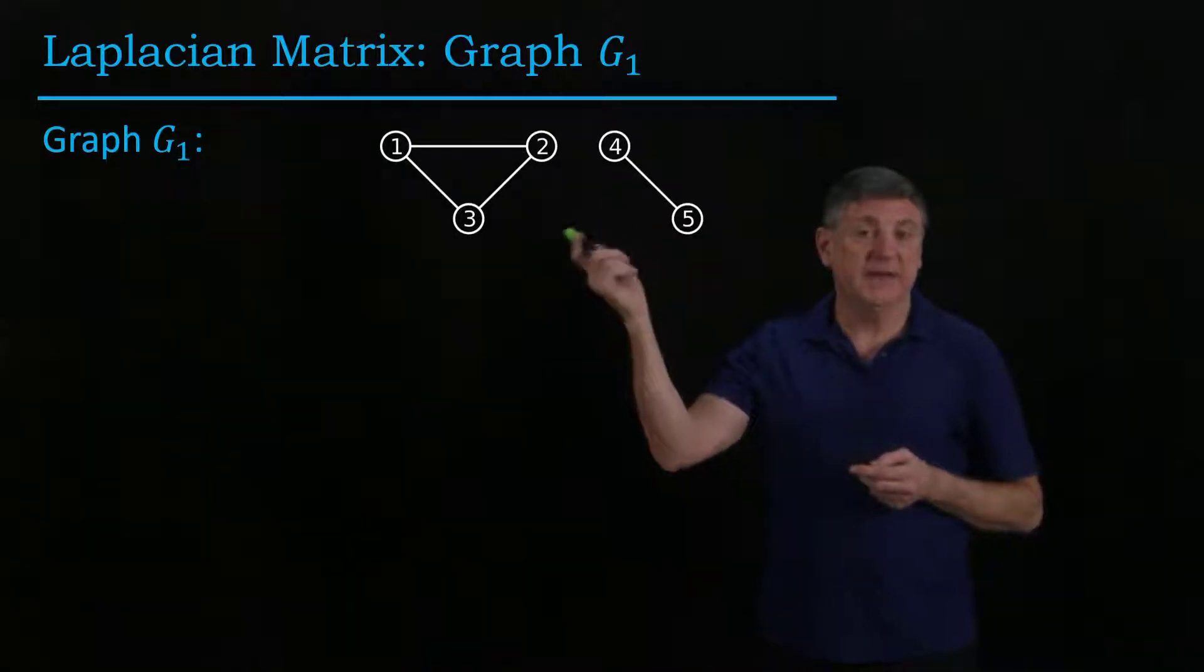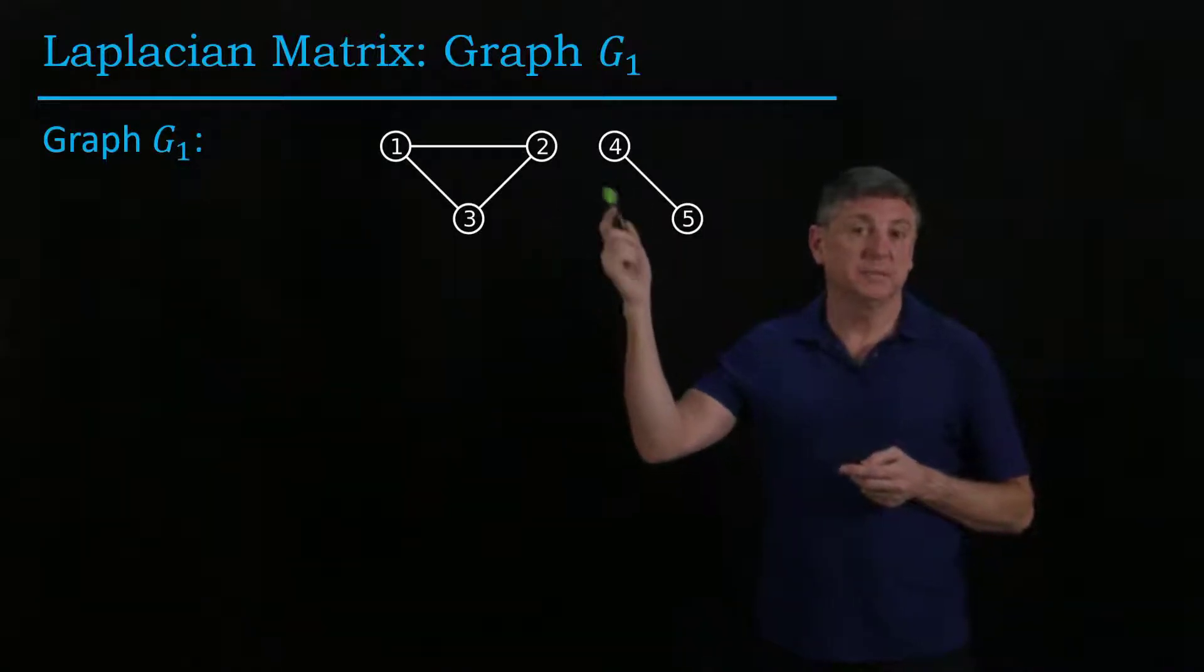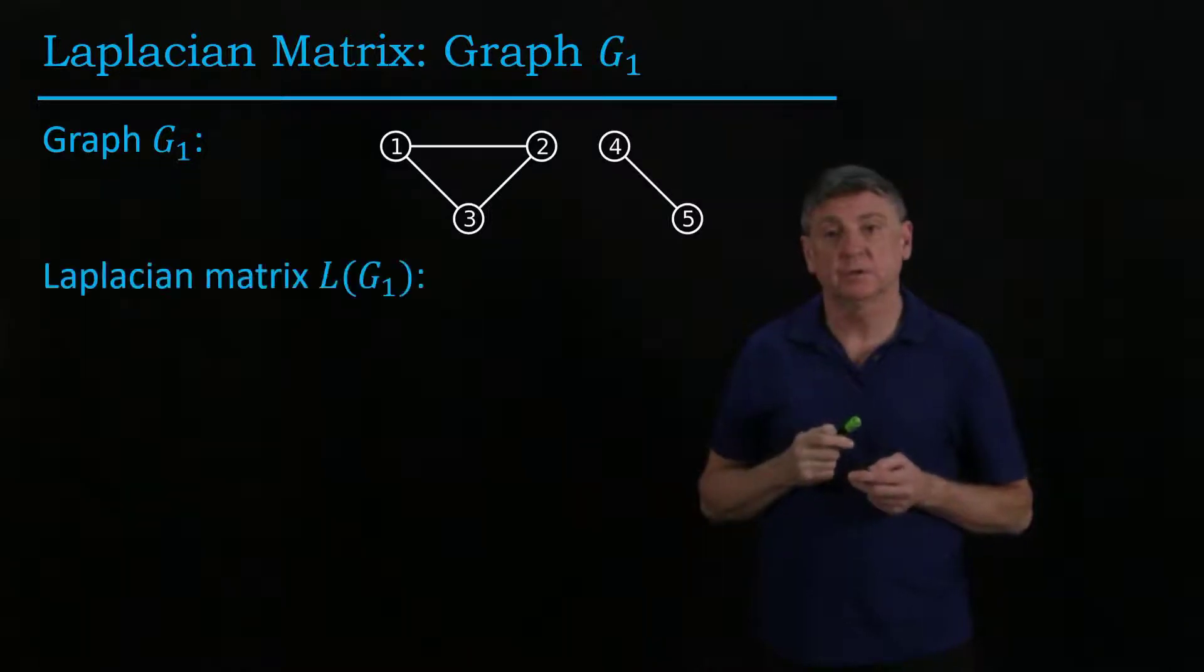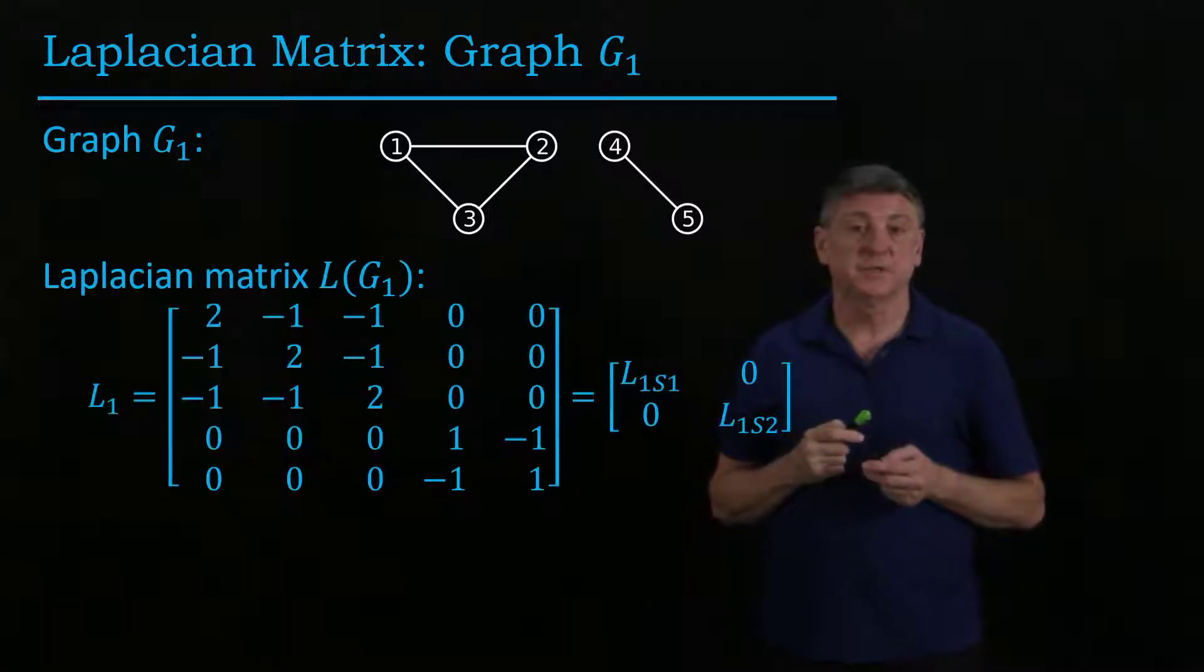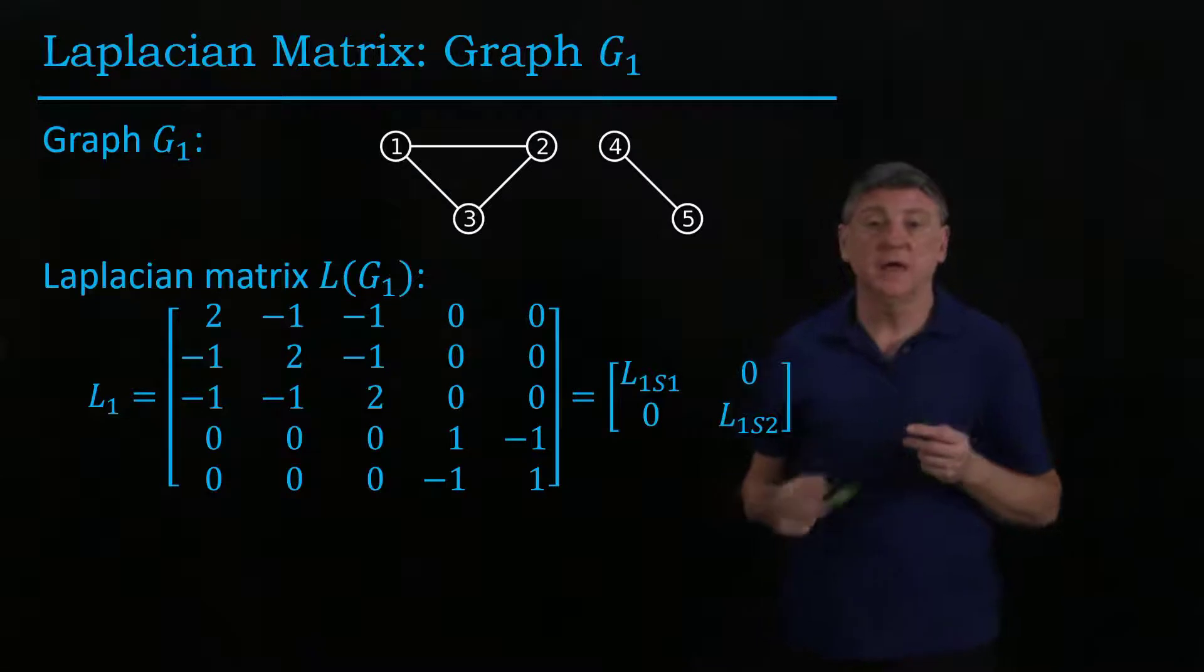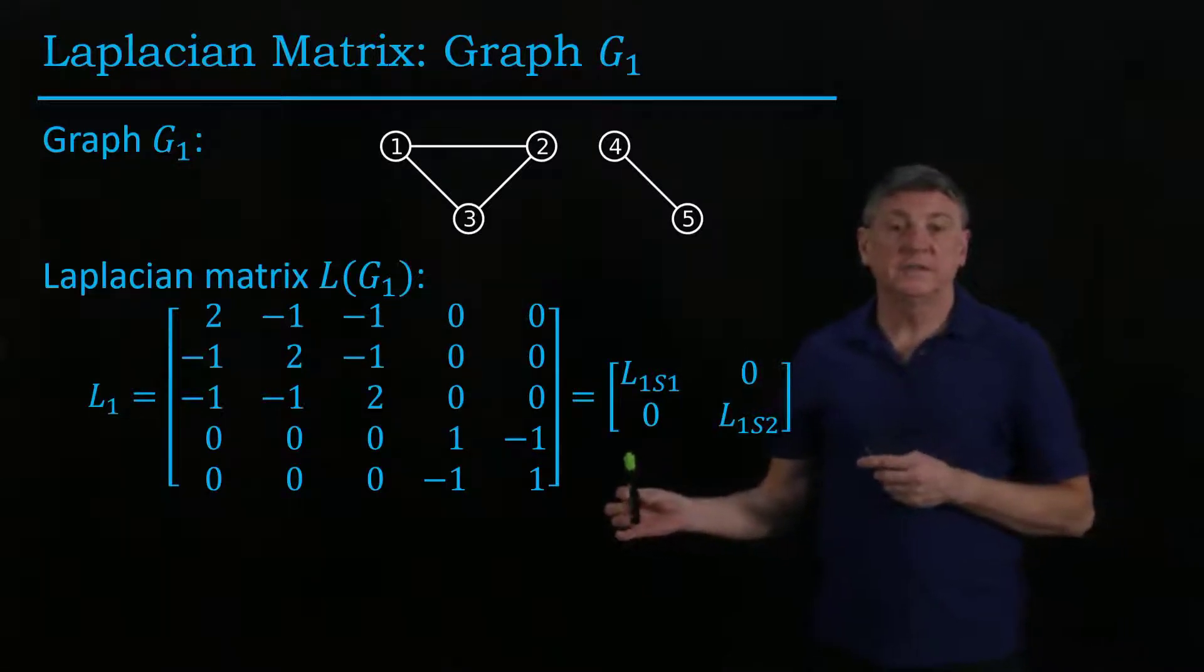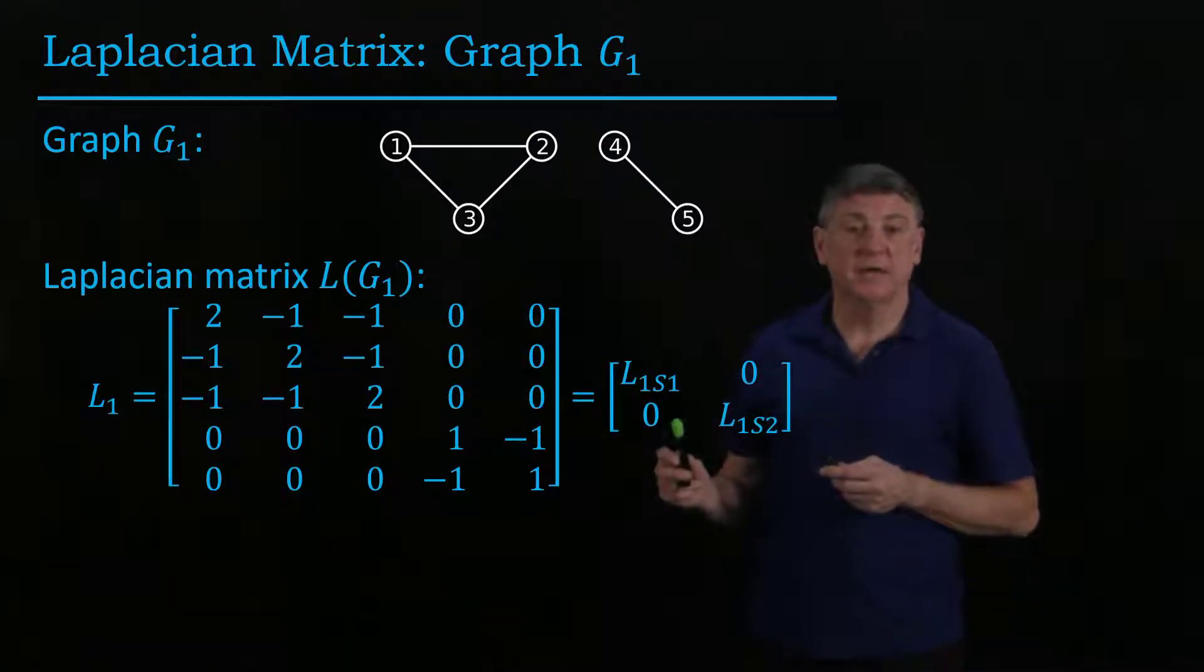This was our first graph. It had a cycle in one component and a simple connection in the other component. The Laplacian matrix for this is something that we've already computed and what we can see is that it has a block diagonal structure.